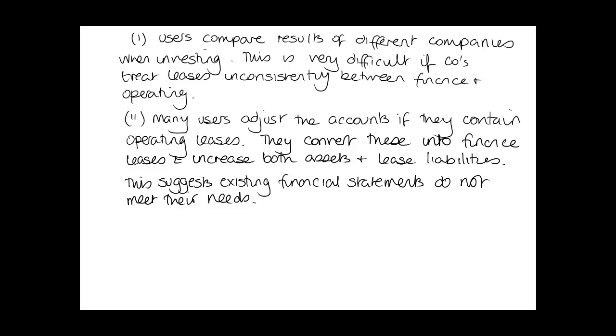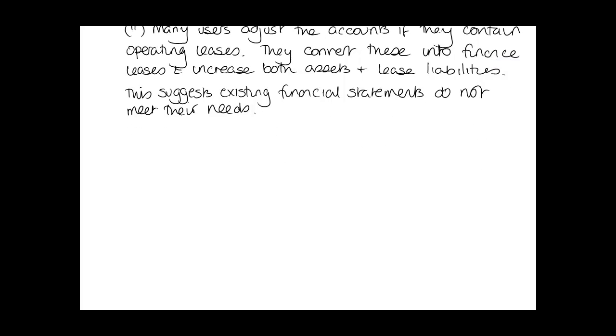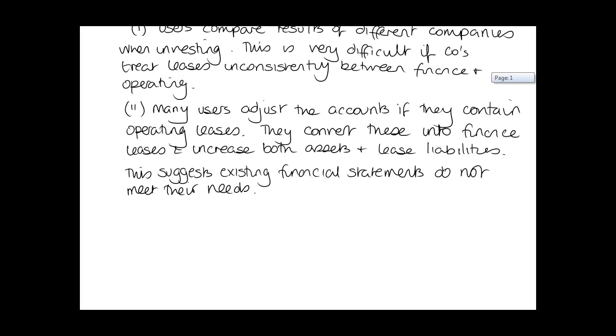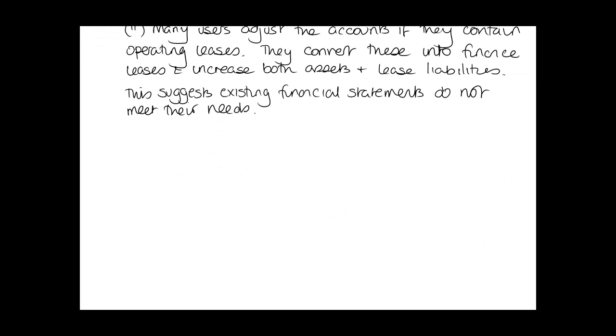A lot of them will take the operating lease expense and multiply it by a number, often known as the rule of eight. They'll multiply it by eight and say that's the value of the asset and the liability, so they increase debt because they don't trust the way that we prepare the accounts.